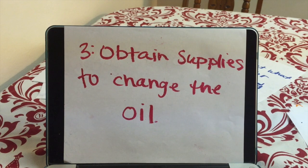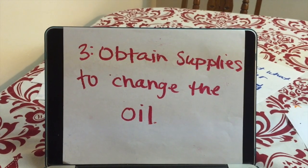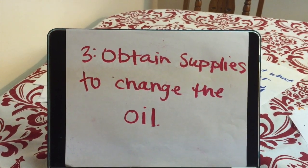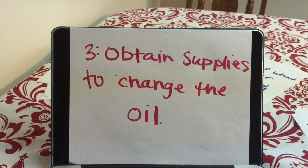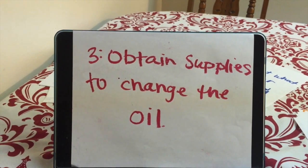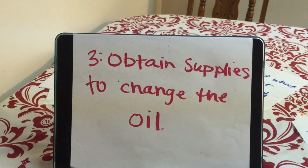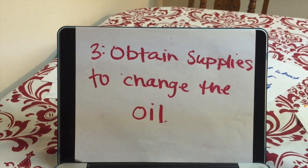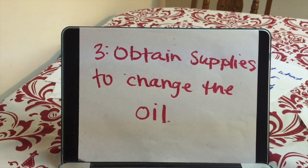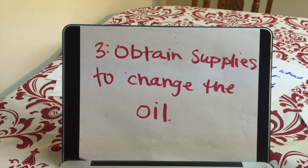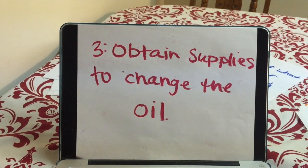You can go to an auto parts store to obtain the supplies to change the oil. You now know what oil you need to pick up and how to find out what filter. You also need to talk to the clerk and say you're changing your oil and need an oil pan, an oil funnel, and some rags. That's all you need. They usually come in packs sold together for about $20 or so.